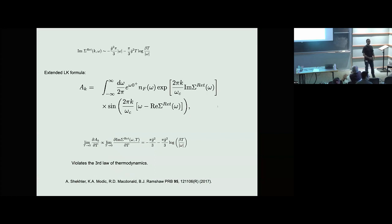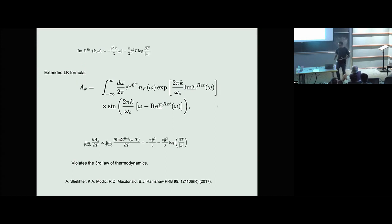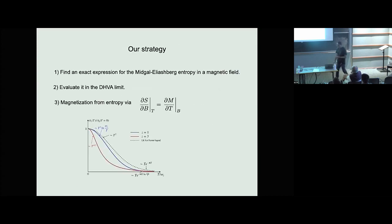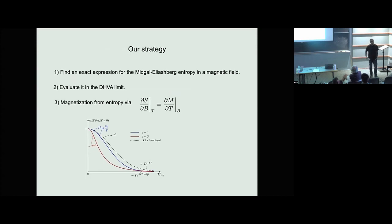Experimentalists use Lifshitz-Kosevich to extract mass. How much would your corrections affect the extracted mass? If you're in a Fermi liquid, the renormalization can be interpreted as a mass. But if you're at the quantum critical point, when you get the form of the oscillations I described — falling as T to the four-thirds — you shouldn't be thinking of that as a mass. It's a bad coordinate system. At the quantum critical point, contributions come from bosons, fermions, all kinds of incoherent stuff; you can't interpret it simply as one parameter.